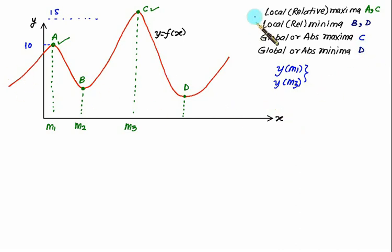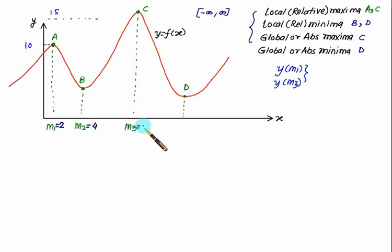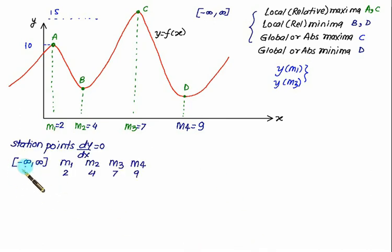Since no range is given, we consider the full range from minus infinity to plus infinity. This entire idea will change as soon as we change the range. Let's assign values: m1 = 2, m2 = 4, m3 = 7, and m4 = 9. These stationary points are obtained by setting dy/dx = 0, and all four points are valid across minus infinity to plus infinity.